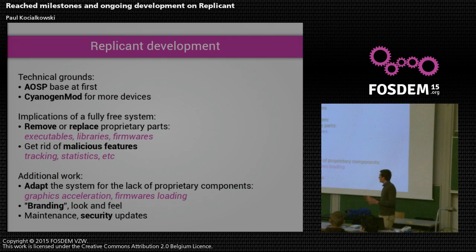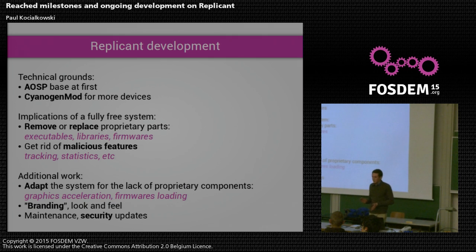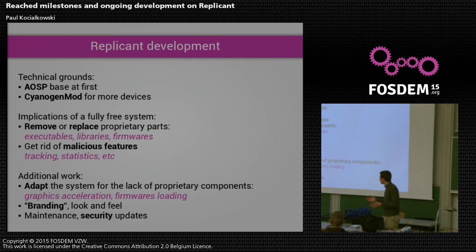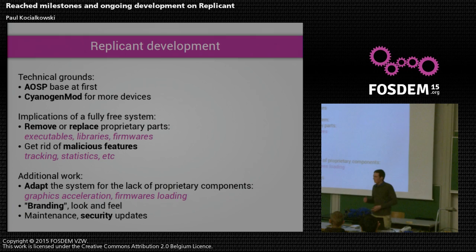I talked a lot about making a fully free system, but what does it mean technically? The main thing we have to do is get rid of non-free software — either we just remove it, in which case the functionality that depends on that piece of software just doesn't work, or we try to replace it. Those non-free bits of software are either executables — usually daemons that run in the background — or libraries, essentially hardware abstraction libraries, which are kind of drivers in user space. And obviously we have firmware — little bits of code that run on chips aside the main CPU.